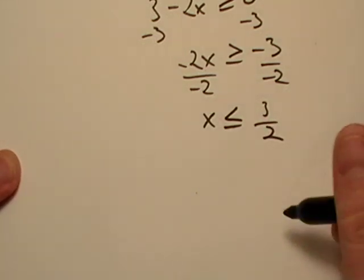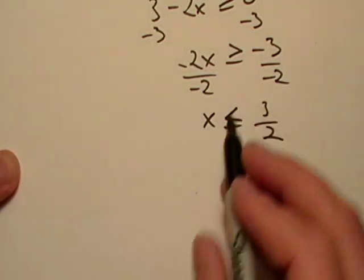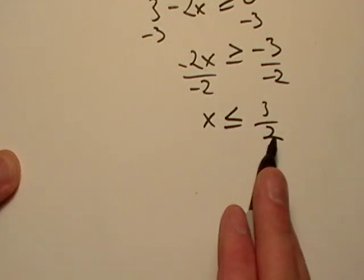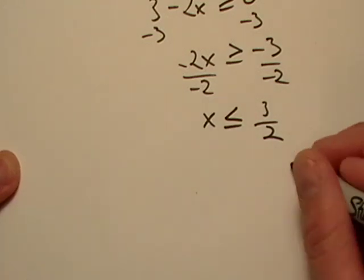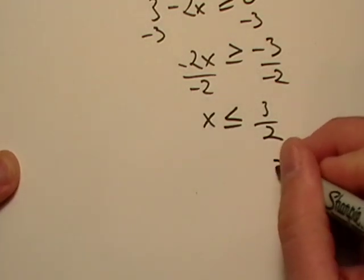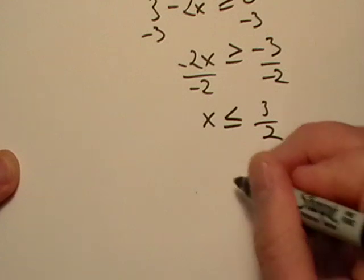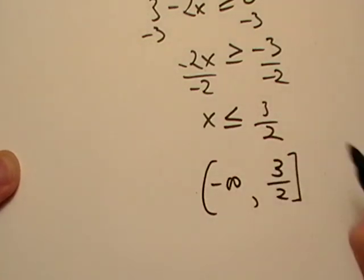So it looks like our domain is going to be x has to be less than or equal to 3/2. So let's go ahead and here's how we'll write that. We'll just start over here on this end, and then we'll go to negative infinity because x has to be less than this.